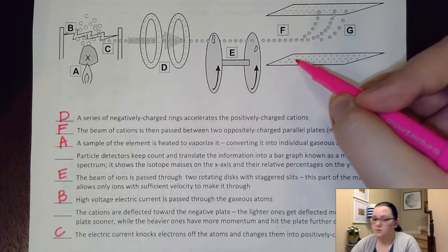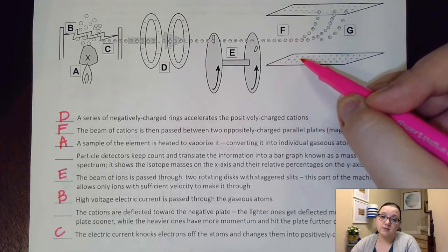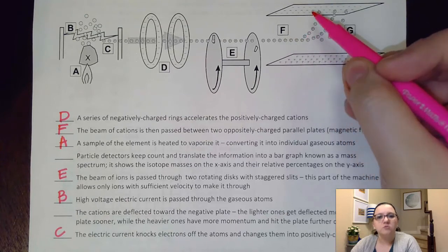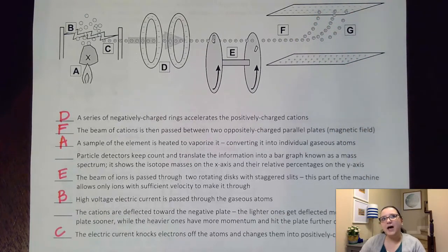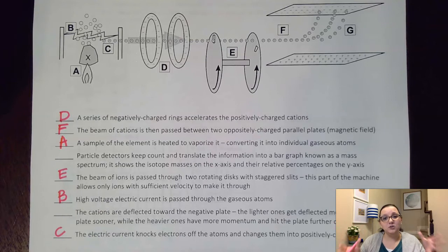So these positives are going to deflect away from this positive plate, but they're going to attract toward the negative plate. However, because we have all of an element together, we have all kinds of different massed isotopes in the sample.